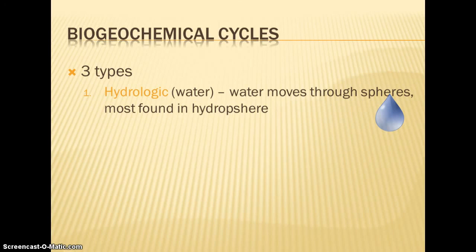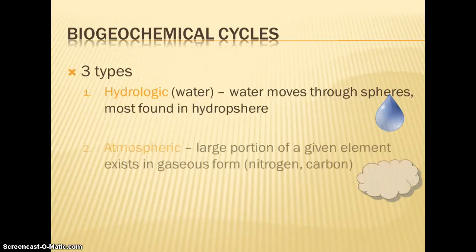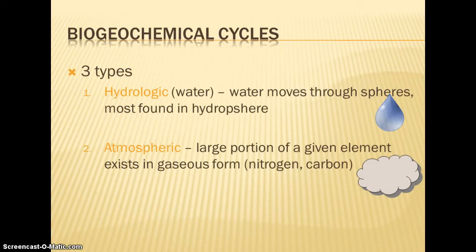There are three types of biogeochemical cycles. The first is the hydrologic or water cycle. Water moves through all of the spheres. Most of it is going to be found in the hydrosphere. We have atmospheric cycles, where the largest portion of that given element exists in the gas form. Nitrogen and carbon are going to be our atmospheric cycles. They're also found in the other spheres, but the majority are found in the atmosphere.